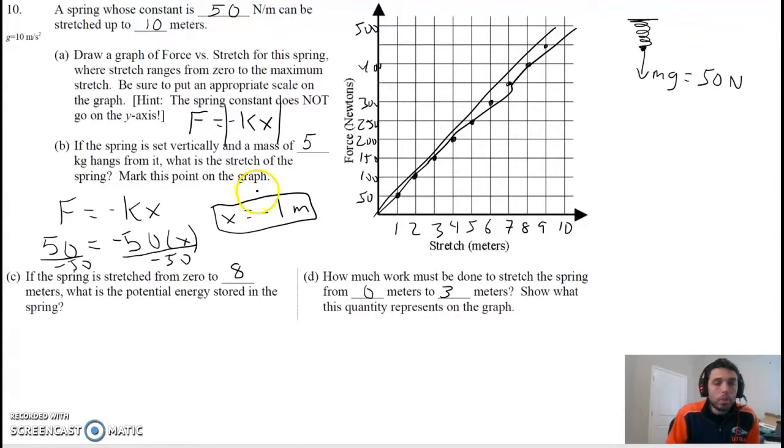Let's go to part C. If the spring is stretched from 0 to 8 meters, what is the potential energy stored in the spring? For a spring, elastic energy, we have 1/2 kx squared is our equation for spring energy. This is just plug and chug. We already know x is going to be 8 because that's how far we're stretching it, k is 50. We just plug in the numbers: 1/2 times 50 times 8 squared. You plug the numbers in and you get 1,600 joules.